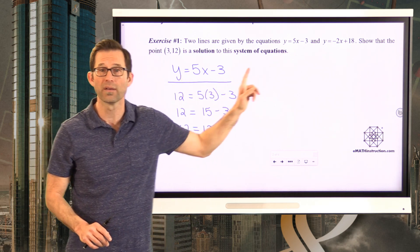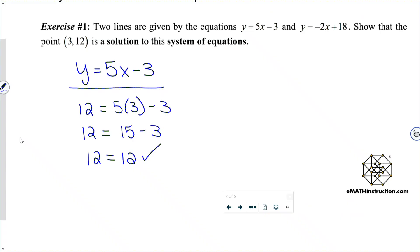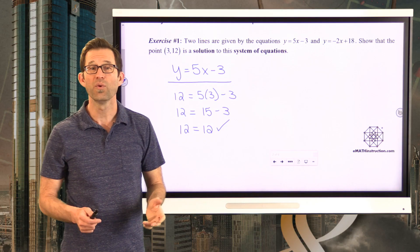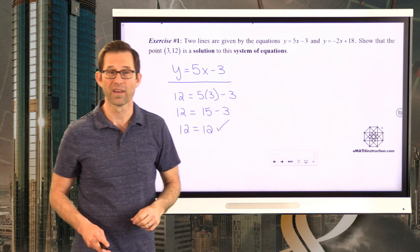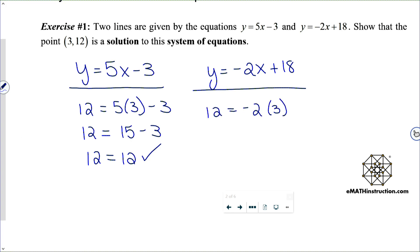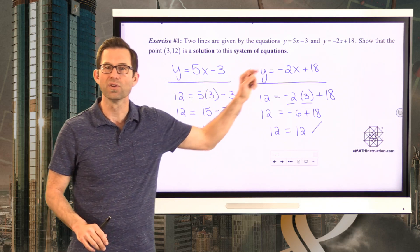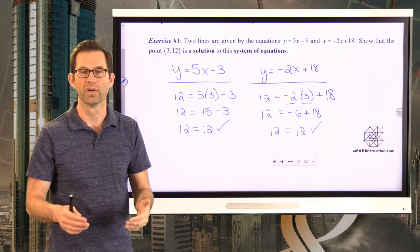Pause the video now and show that this point also lies on the second equation, y equals negative 2x plus 18. I gave you the harder one because it involves negative work. I'm going to put 12 in for y and 3 in for x. Negative 2 times positive 3 is negative 6, and negative 6 plus positive 18 is 12. So it also lies on that line, and therefore the point is a solution to the system.